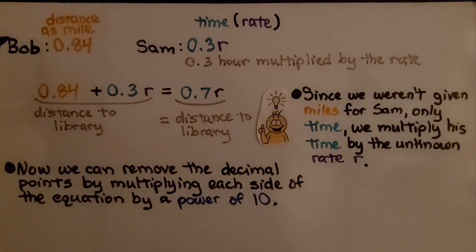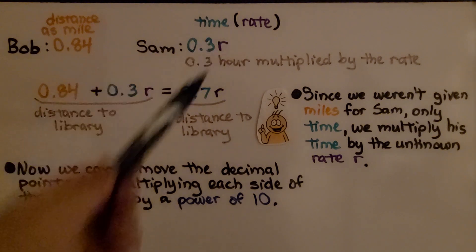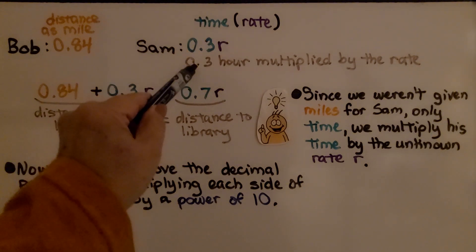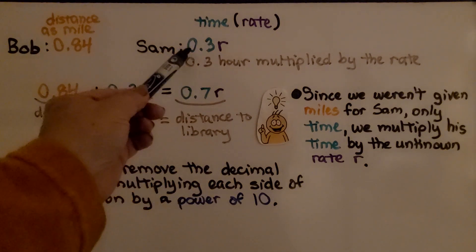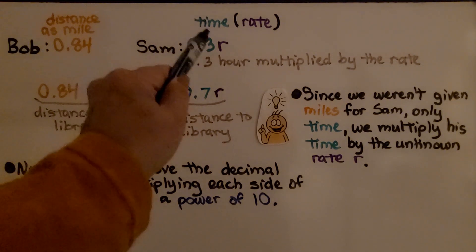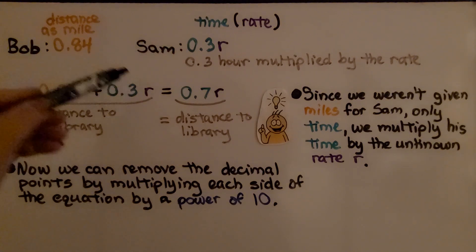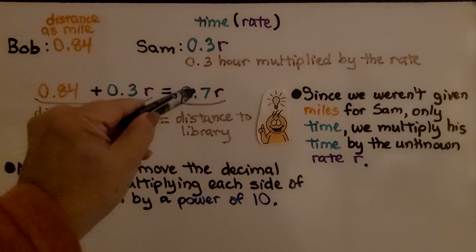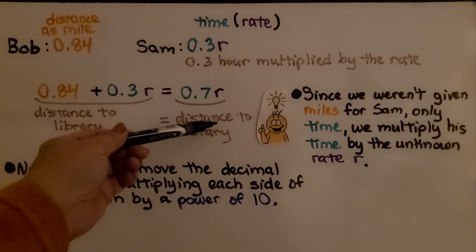We know that Bob walked 0.84 mile. We know that Sam walked 0.3 of an hour and we're looking for the rate. So we're going to do 0.3 hour multiplied by the rate for Sam. Since we weren't given miles for Sam, only time, we multiply his time by the unknown rate r. So here's Sam's and here's Bob's. Our equation is going to be 0.84 plus 0.3r equals 0.7r. That's how long Bob walked.